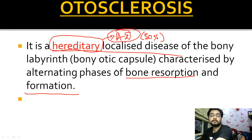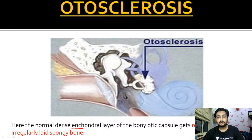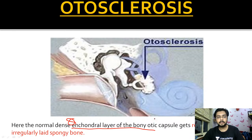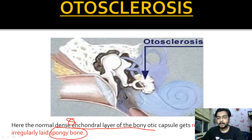'Localized disease' means it is localized to the bony labyrinth - specifically the oval window and cochlea. There are alternating phases of bony resorption and formation. The otic capsule has three layers, and the layer involved is the endochondral layer. This endochondral layer gets replaced by spongy bone. That is the pathology in very simple words that you have to remember.